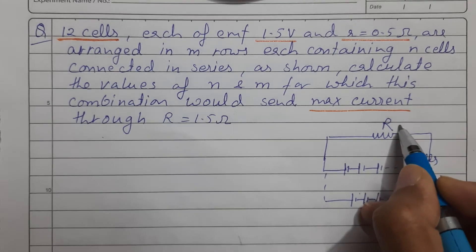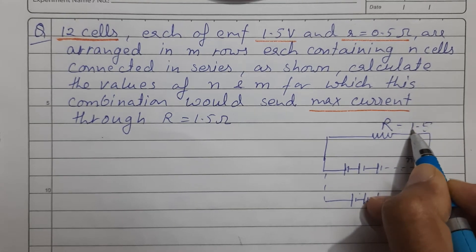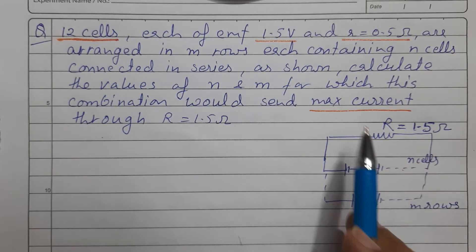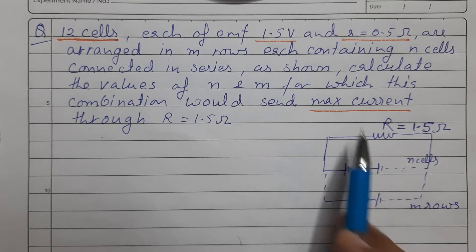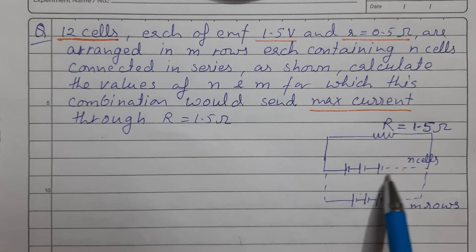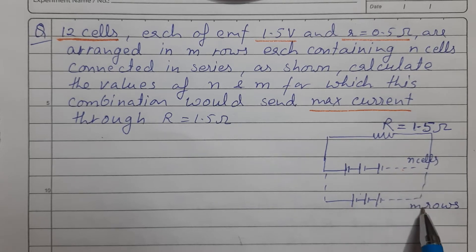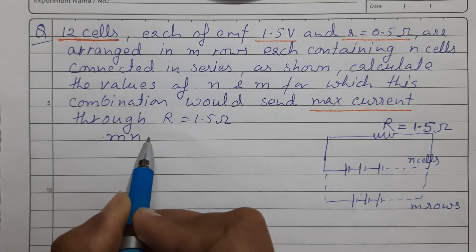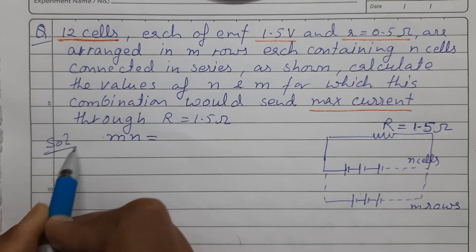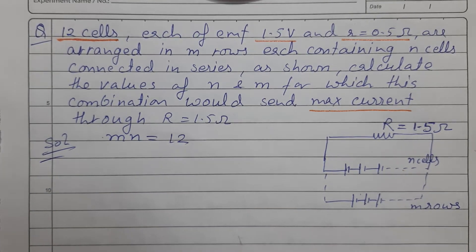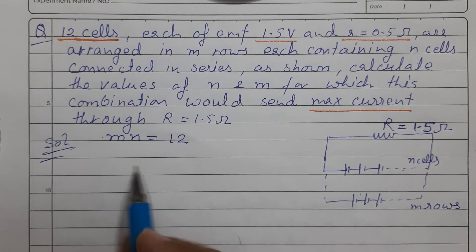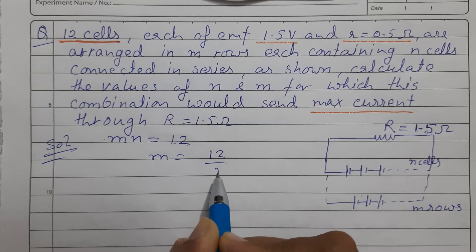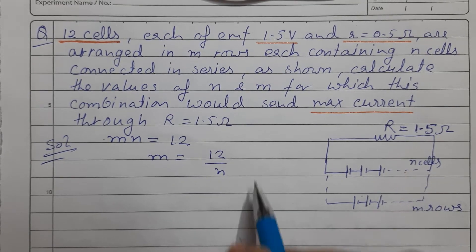We have R value of 1.5 ohms given for maximum current. If we have a combination of N series cells and M parallel rows, the total number of cells is M into N, which equals 12. From here we can calculate the value of M as 12 by N.